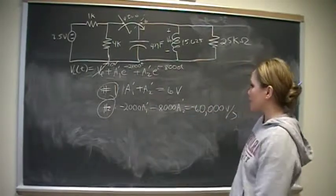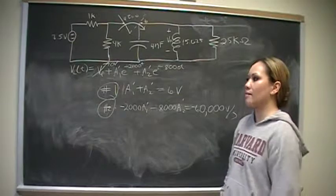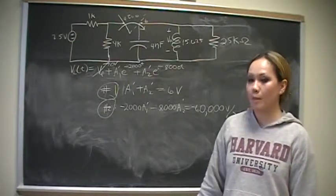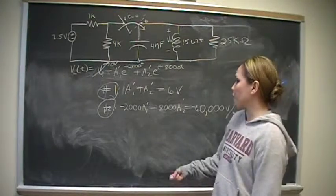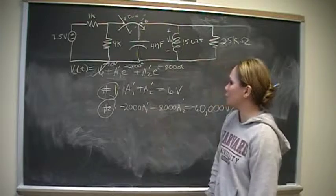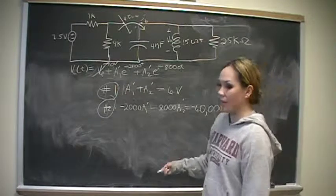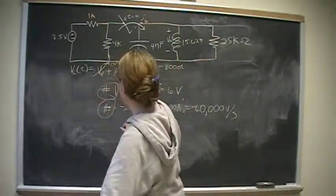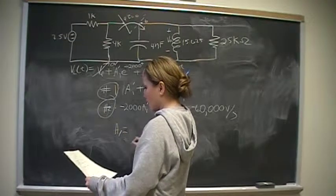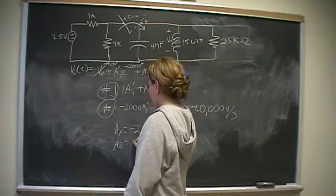Solve these equations simultaneously. And I'm assuming that the viewer has a calculator that can do that, or the viewer has the skills to do that. The math skills. You can do it a couple of ways. You can multiply the top by 2,000 and add the two equations. You can solve for A1 and plug it into here. Lots of ways to solve this, but at the end, you should arrive at the answer that A1 is negative 2 and A2 is 8.